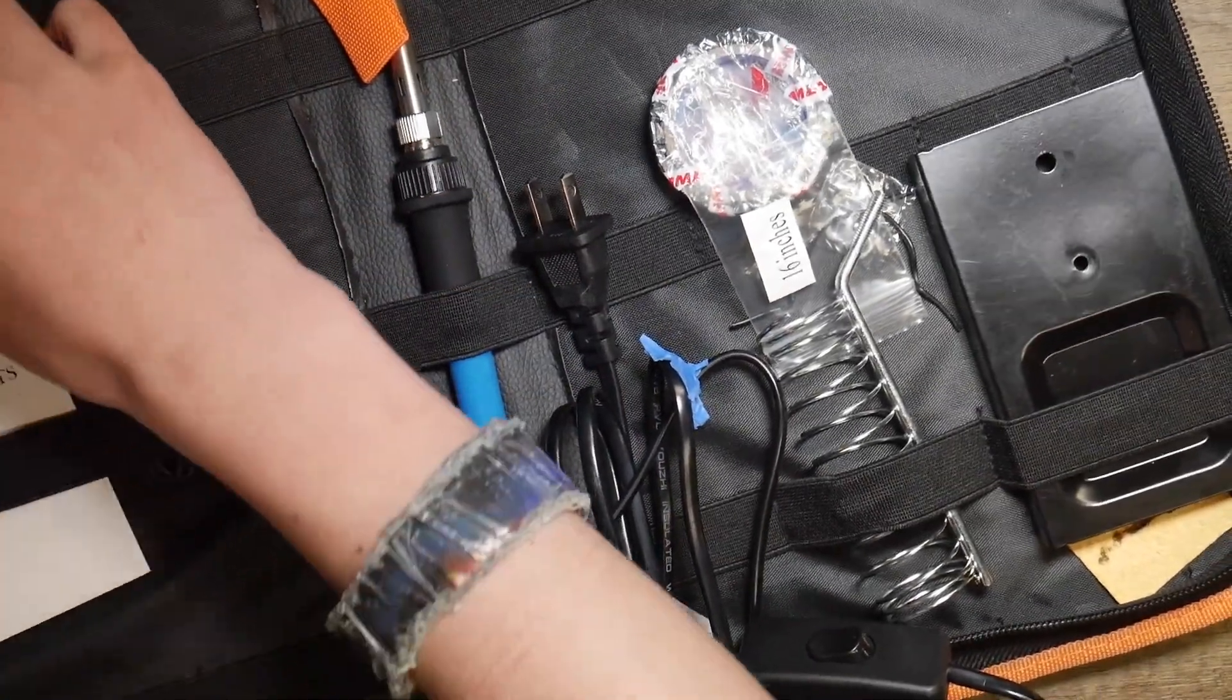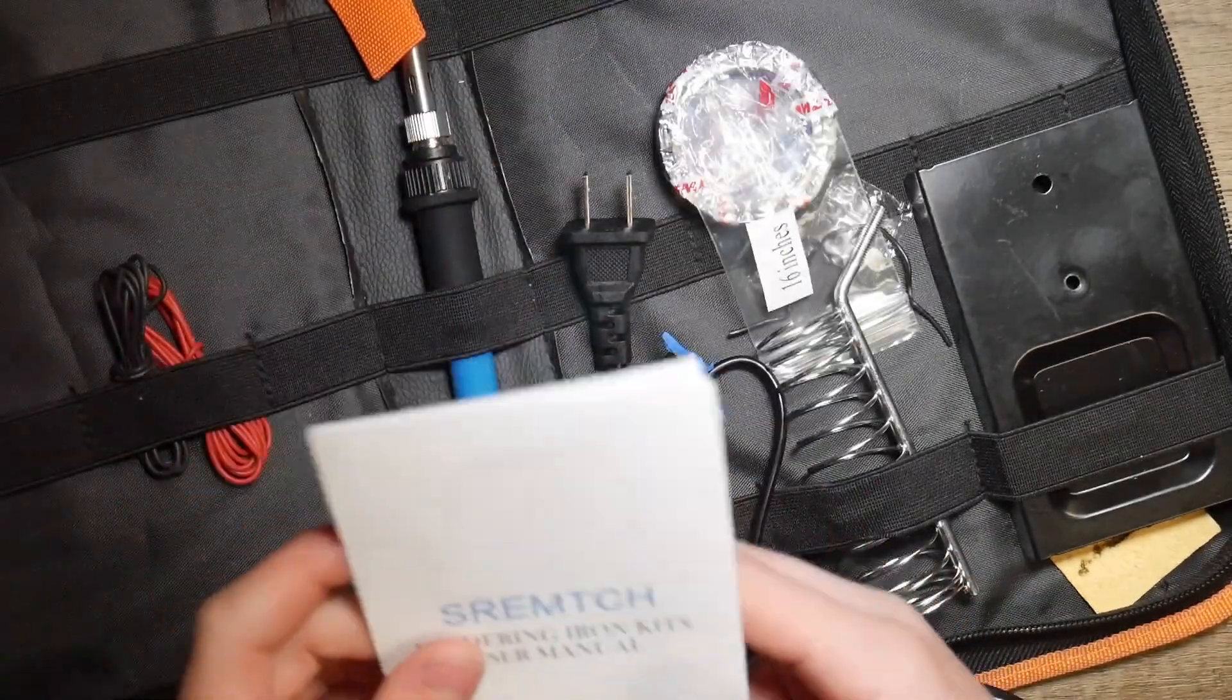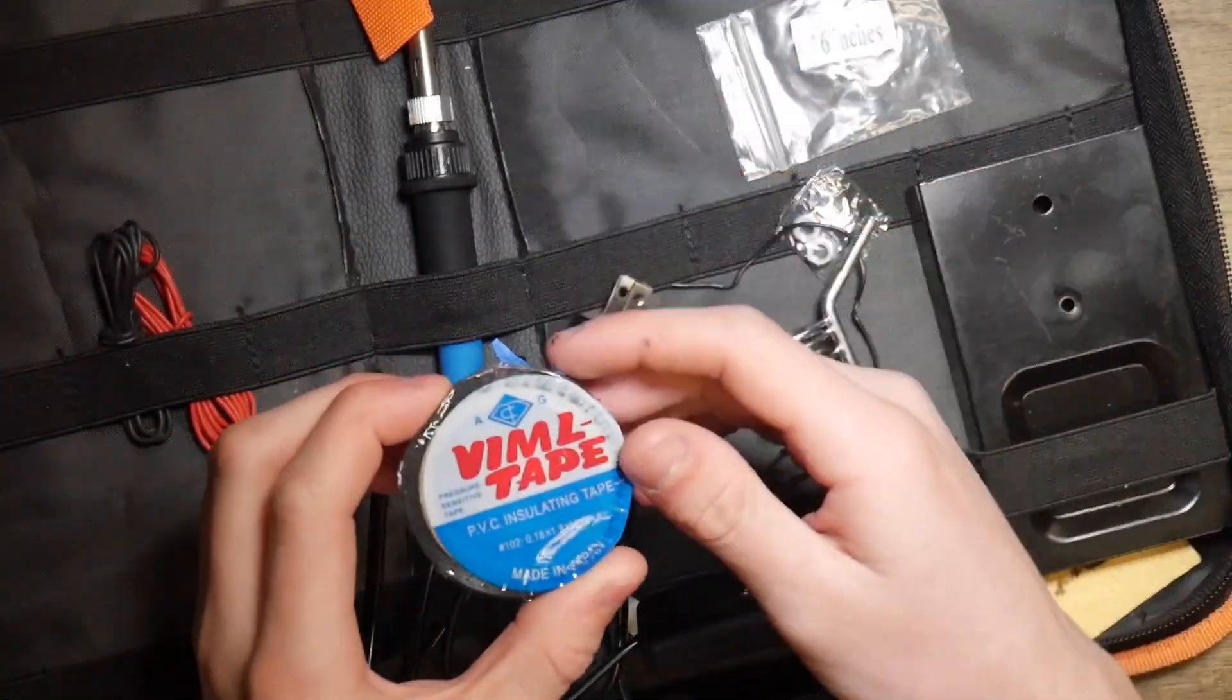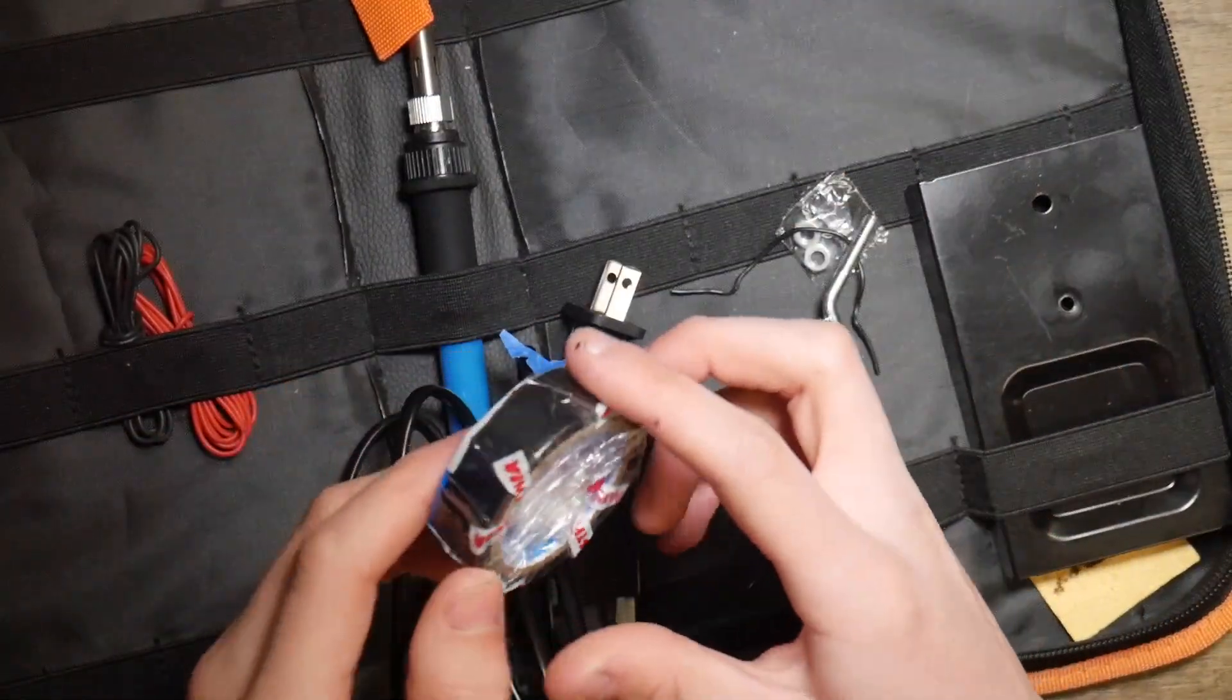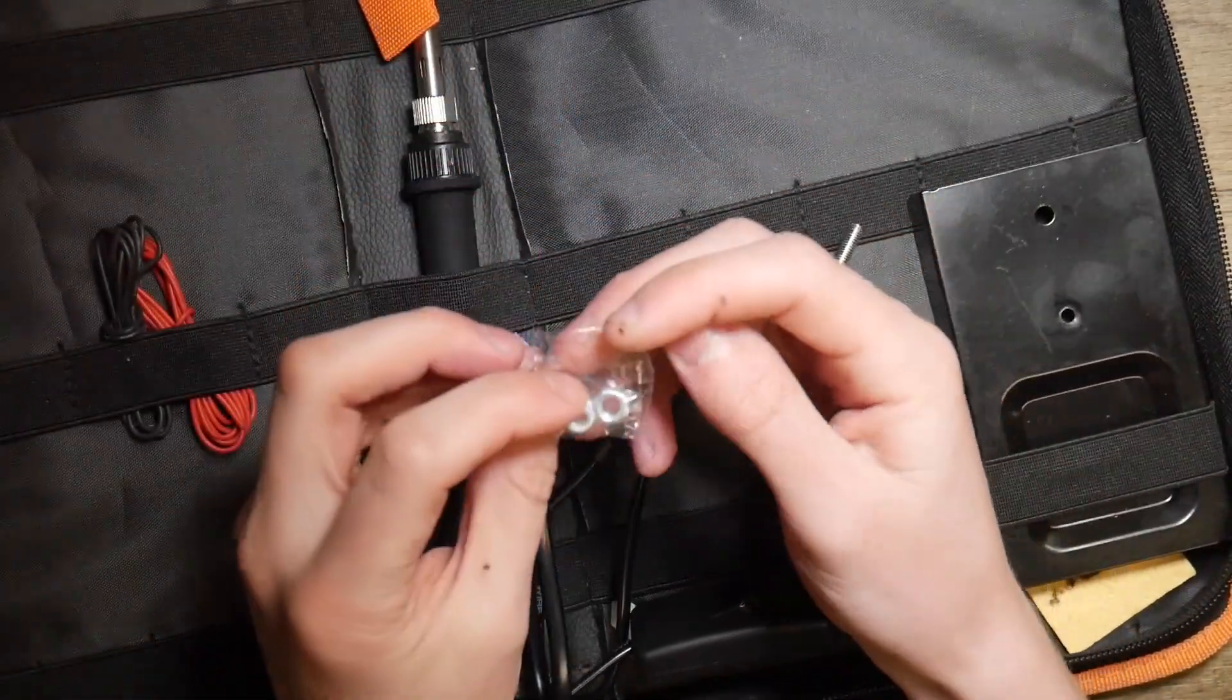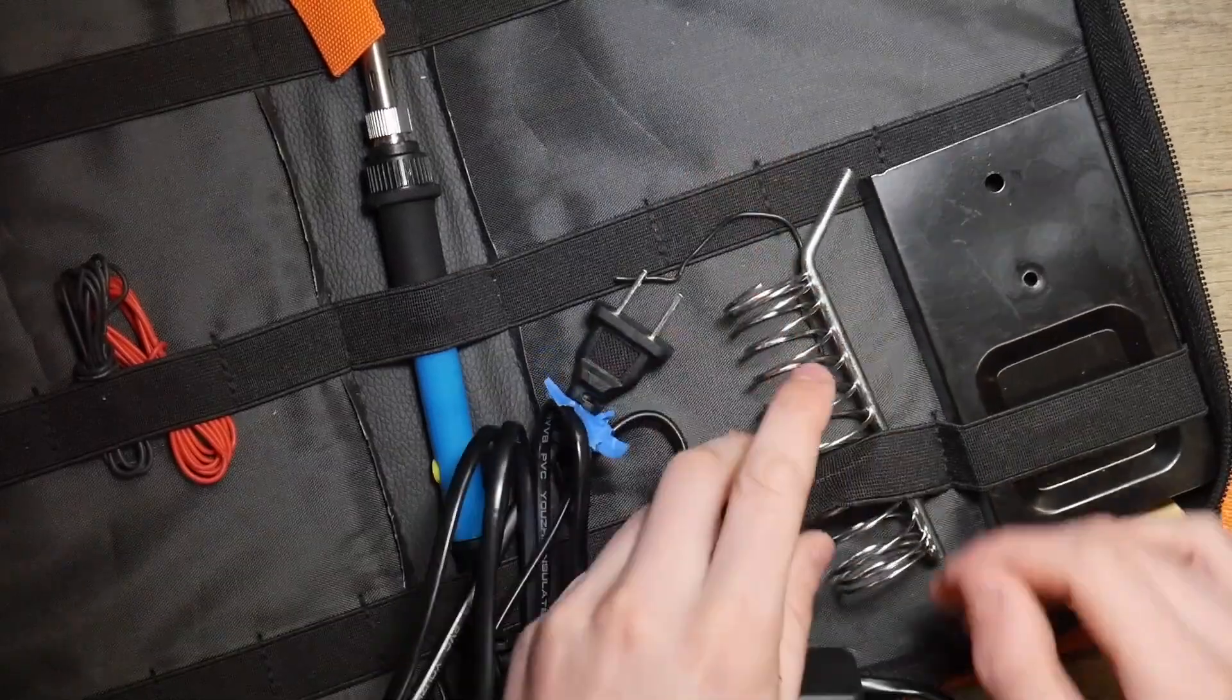It came with this user's manual with all sorts of Engrish in it. I'm not going to go over this, but this is just really basic stuff. It's pretty self-explanatory, this thing. It came with this Vimold tape, which I'm pretty sure is supposed to say Vinyl Tape. They just misspelled it. Or it could be Vimold tape. I'm not really sure. It came with two, maybe 10 millimeter hex nuts. I'm not sure what these are for. Again, it's probably in that instruction manual that I should read.